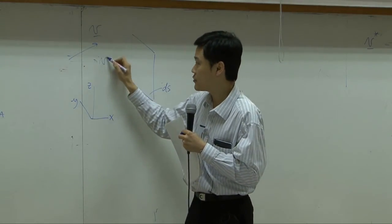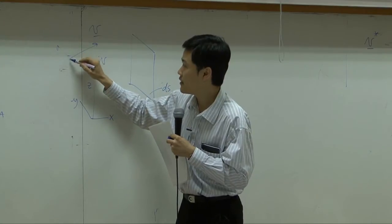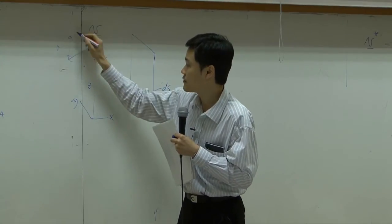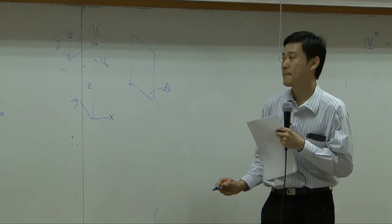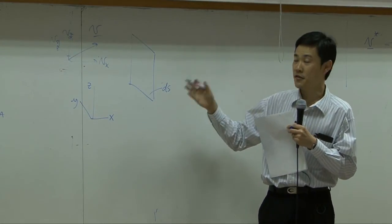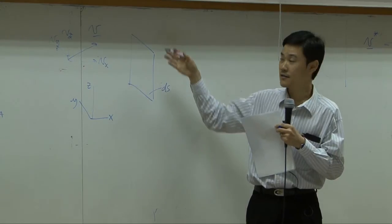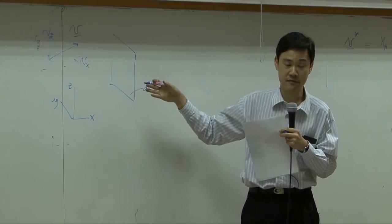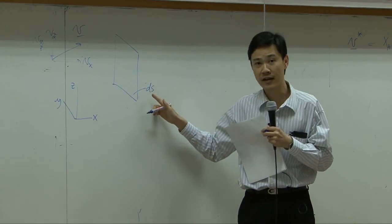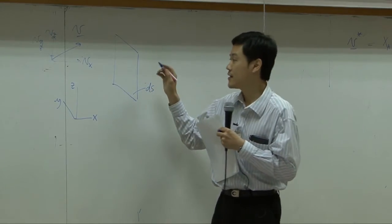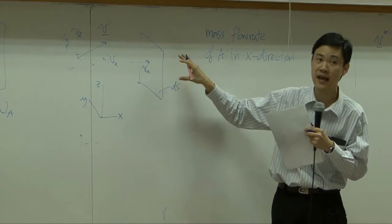Now, V here can be taken into three different directions: Vx, Vy, Vz. If I consider a screen on an opening on an area with the area ds, suppose this, through this area.